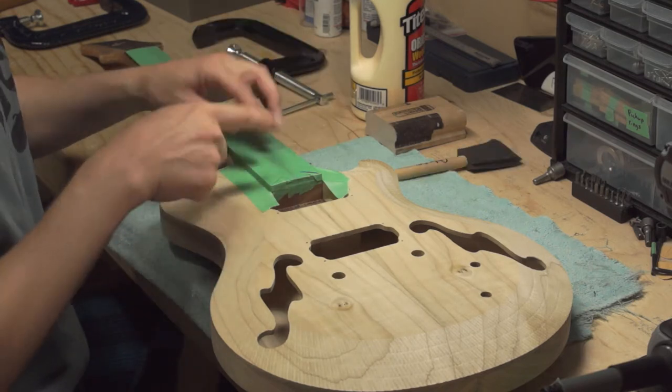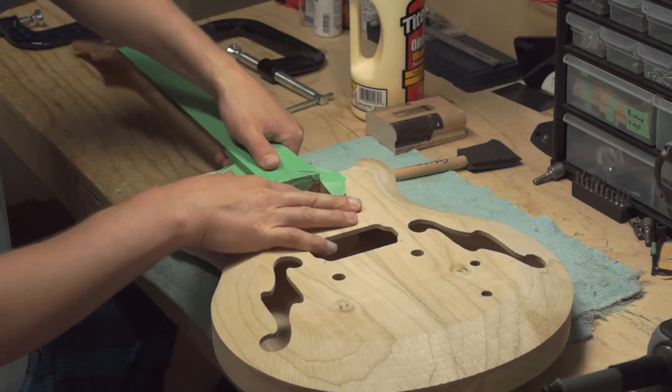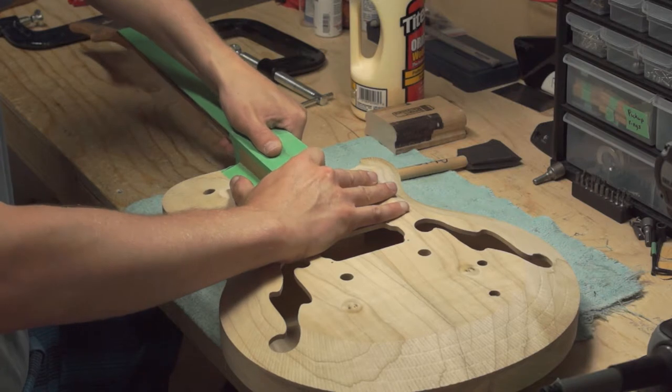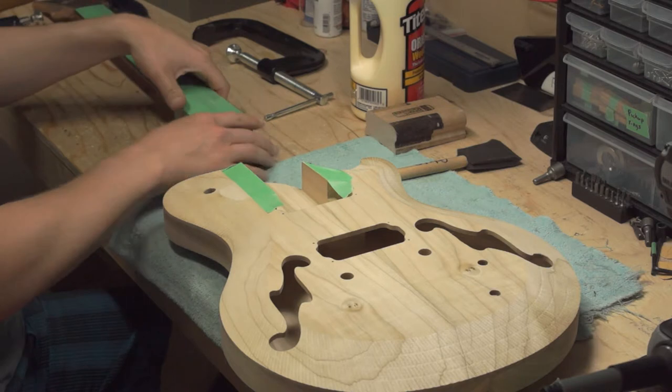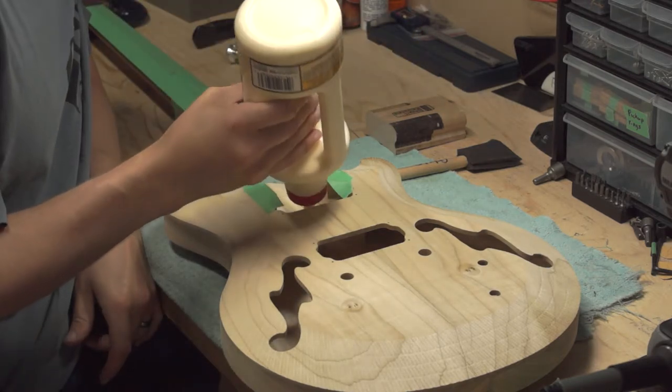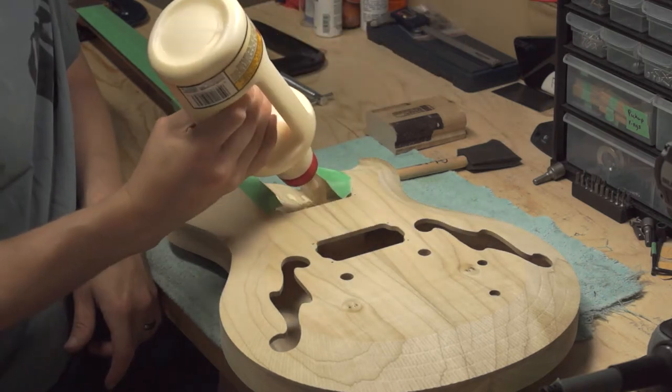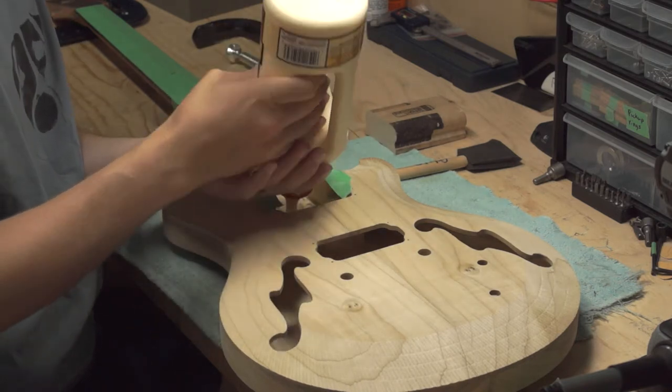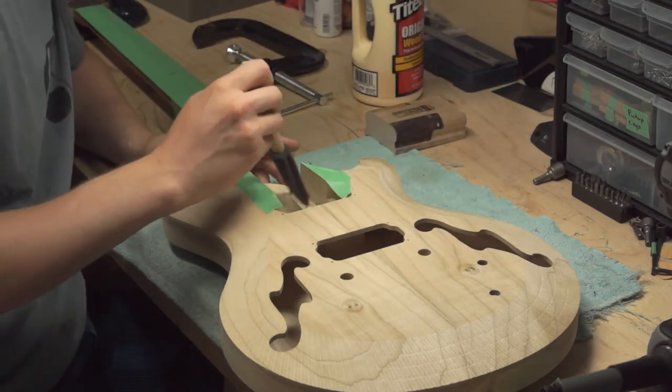So now what we want to do is take the neck out very carefully because we don't want to mess up the tape job we just did. Put a little bit of glue in the slot here not a whole bunch because a lot of it's going to squeeze out and brush it around with the brush.